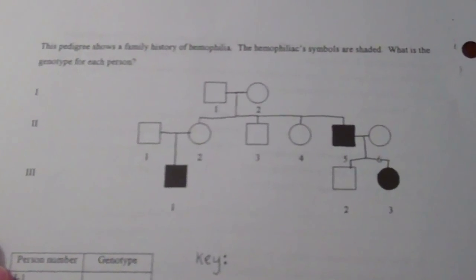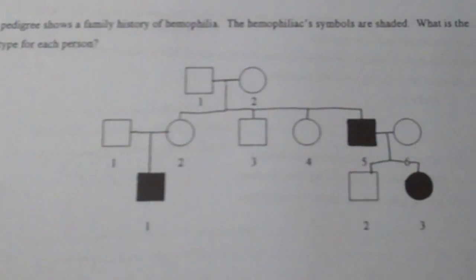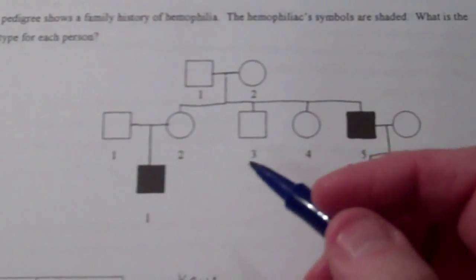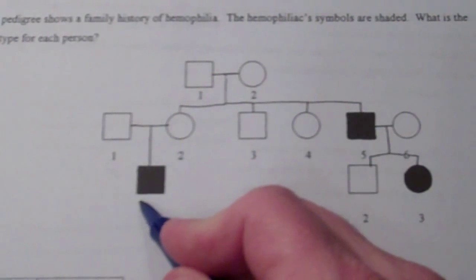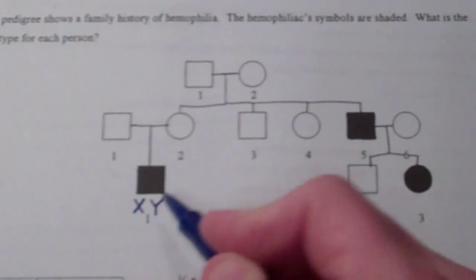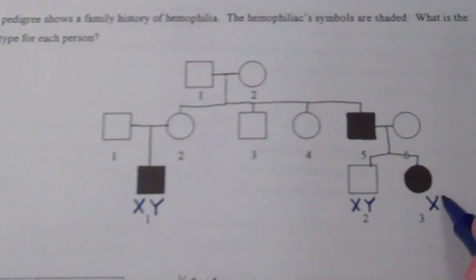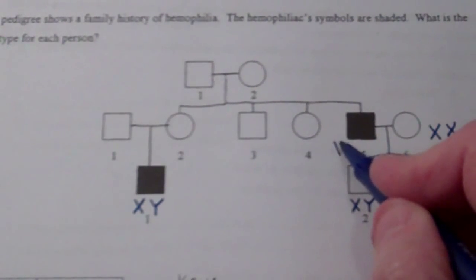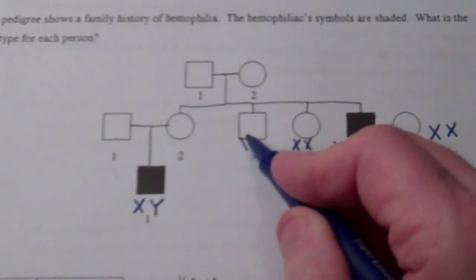Remember, shaded is recessive in ours and dominant are the clear ones. There are a couple different approaches — I'm going to start by writing the sex chromosomes underneath everybody, and I'm going to start from the bottom up. This one is X, Y... X, X, and so on.